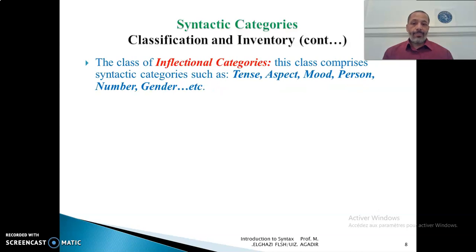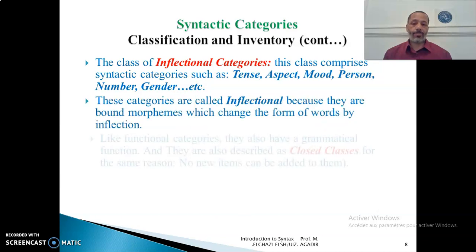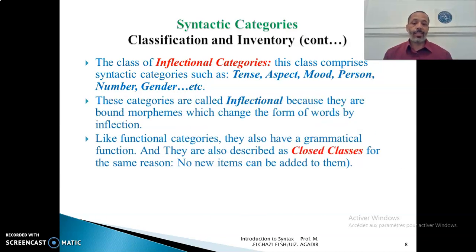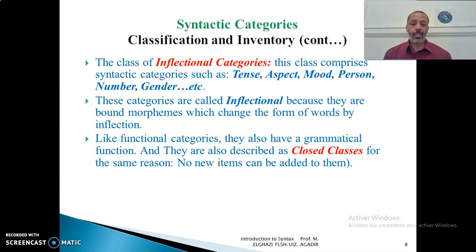The third class is called inflectional categories. This is a very recent classification. This class comprises syntactic categories such as tense, aspect, mode, person, number, gender, etc. These categories are called inflectional because they are bound morphemes which change the form of words — but not the meaning — by inflection. Like functional categories, they also have a grammatical function and are described as a closed class, as no new items can be added to them.